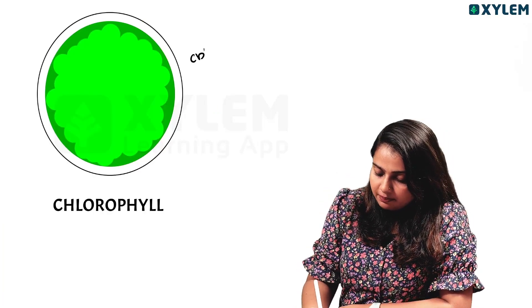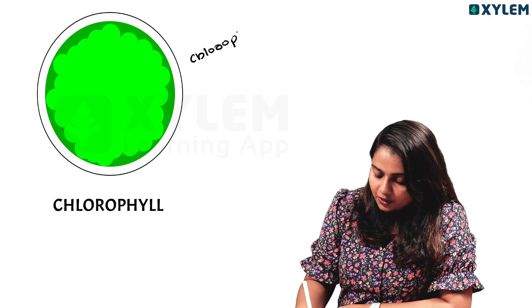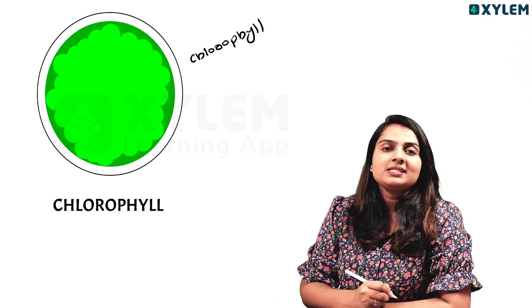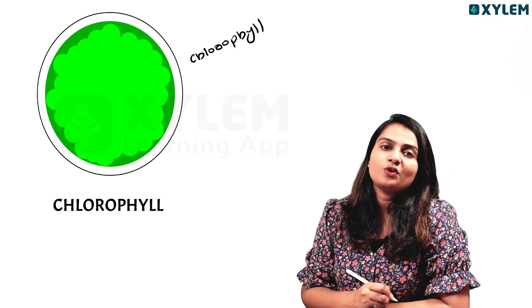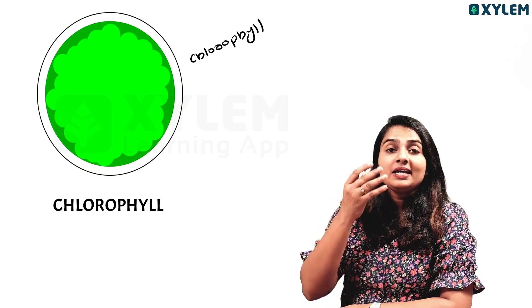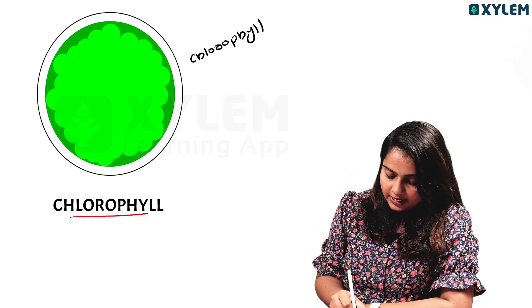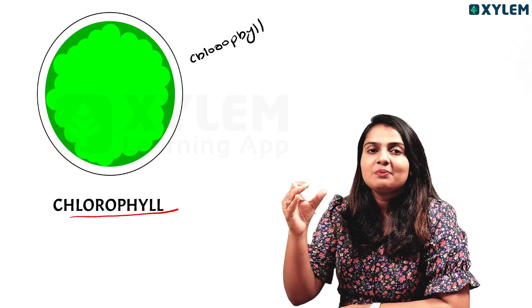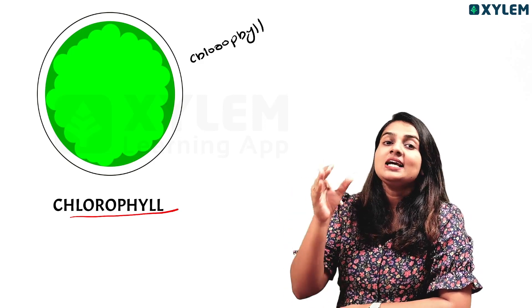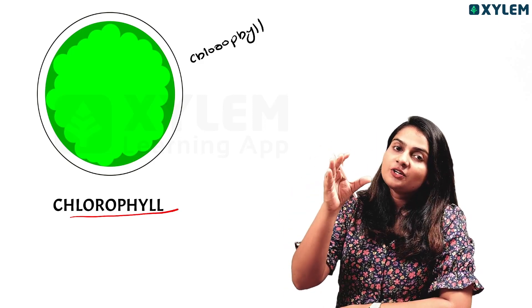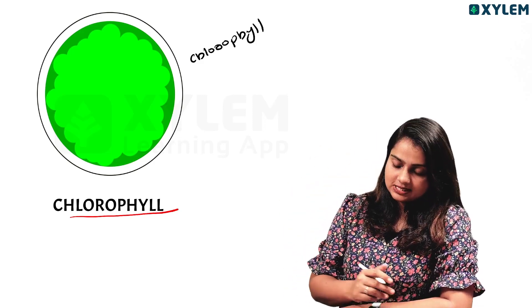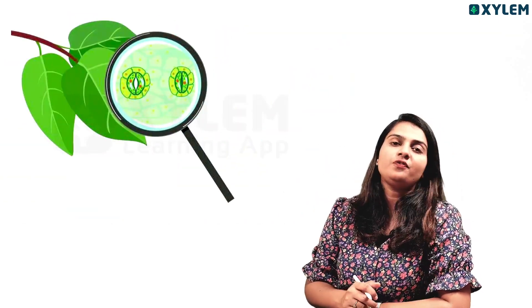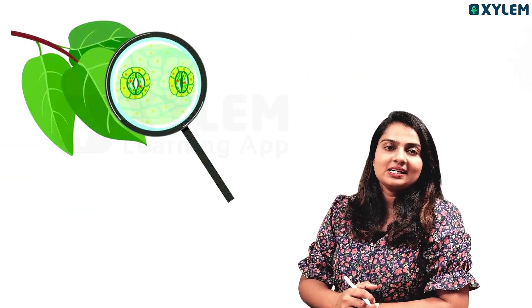We will use chlorophyll. Chlorophyll is a green-colored pigment found in leaves. Chlorophyll is a pigment that plays a key role in photosynthesis, and water and minerals are also present in the leaf.